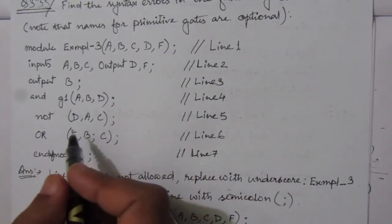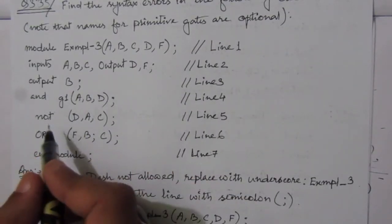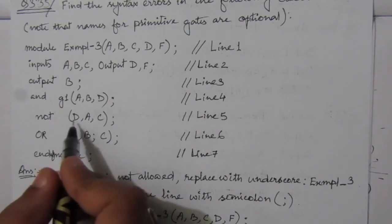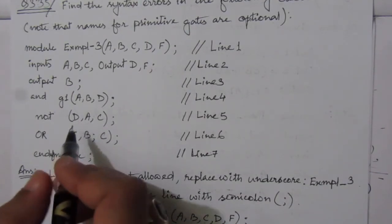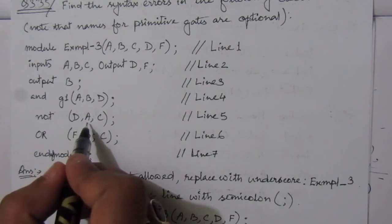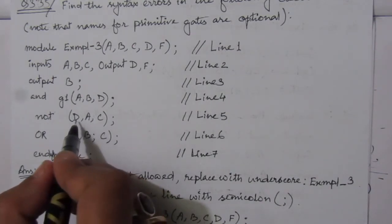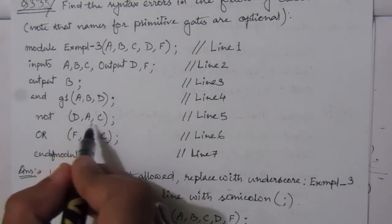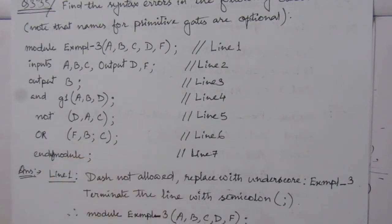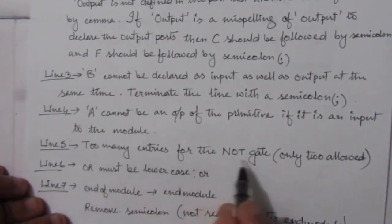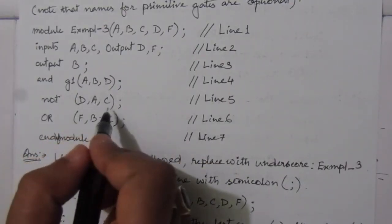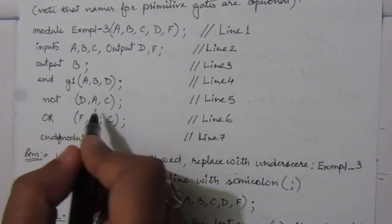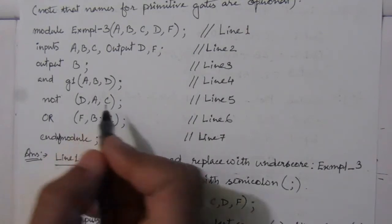In the fifth line, we have a NOT operation. In the case of NOT, we can have only two entries — for example, NOT D, A finds the complement of A and stores the value in D. But here three variables are defined, which gives too many entries for a NOT gate. Only two are allowed.